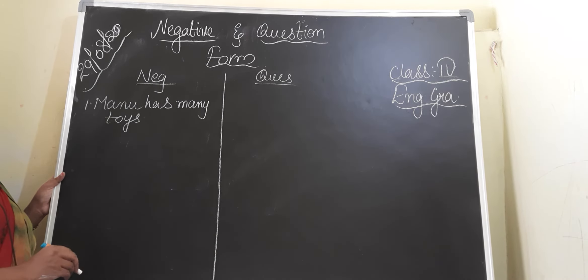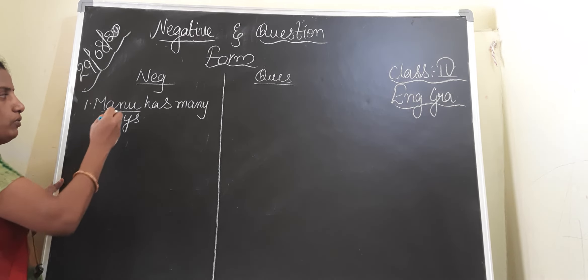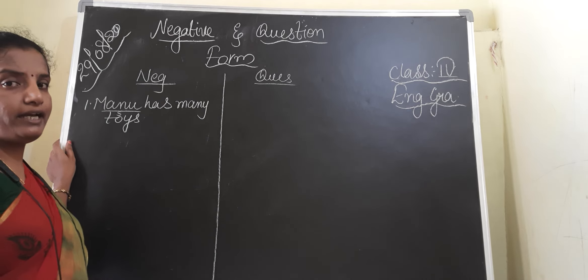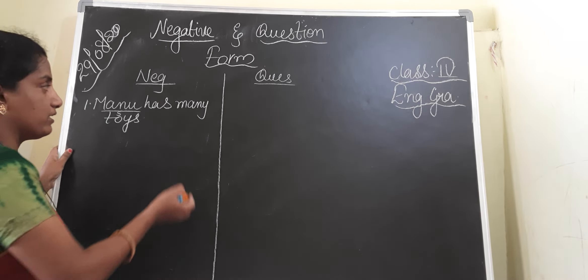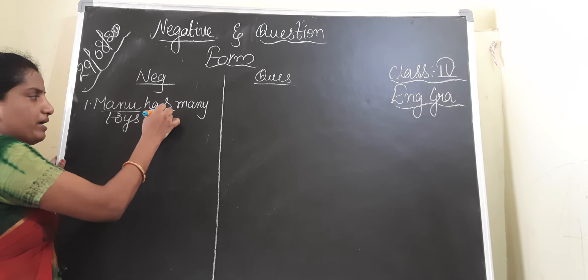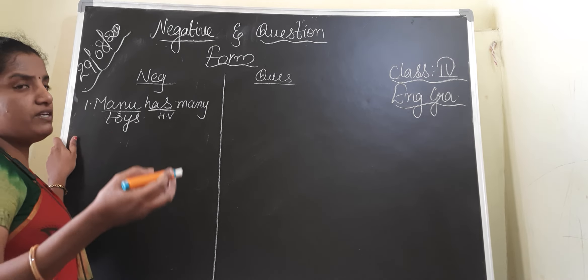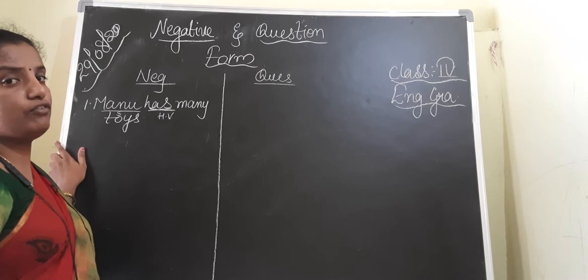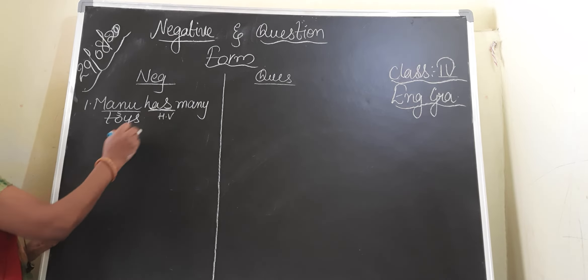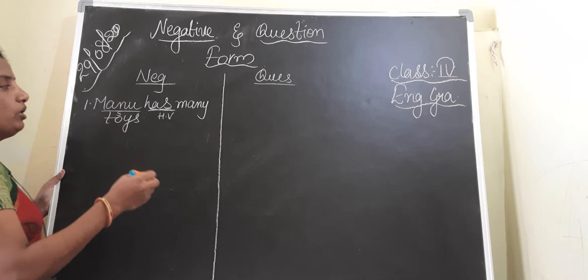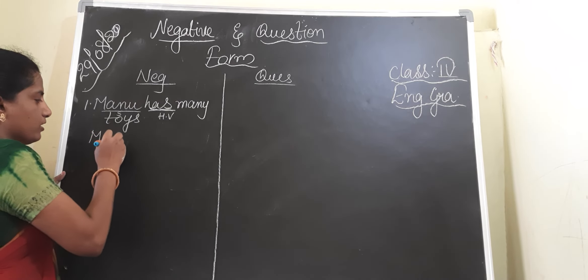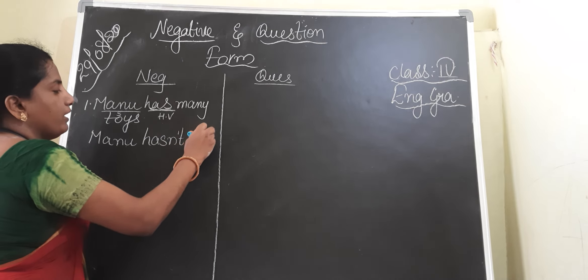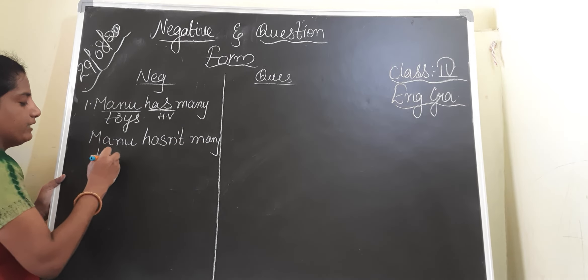Statement: Manu has many toys. To write the negative form, first underline the subject — Manu is the subject, the one about which we are talking. What is the verb given? Here they did not give a main verb. 'Has' is the helping verb — HV, helping verb. Whenever you have a helping verb in a sentence, to write the negative form we simply add 'not.' So: Manu hasn't many toys.